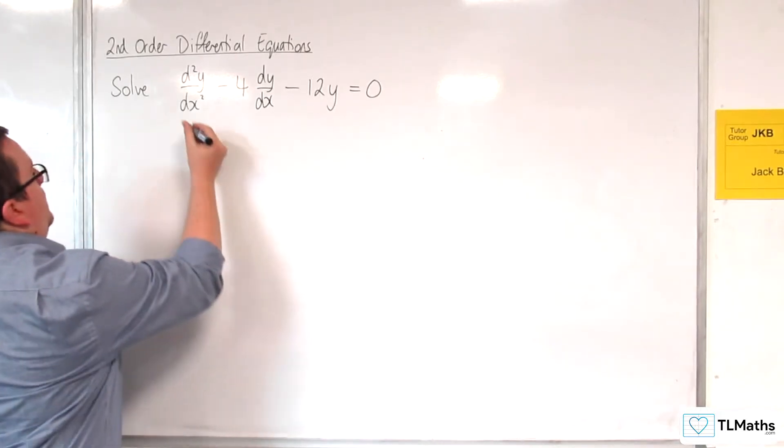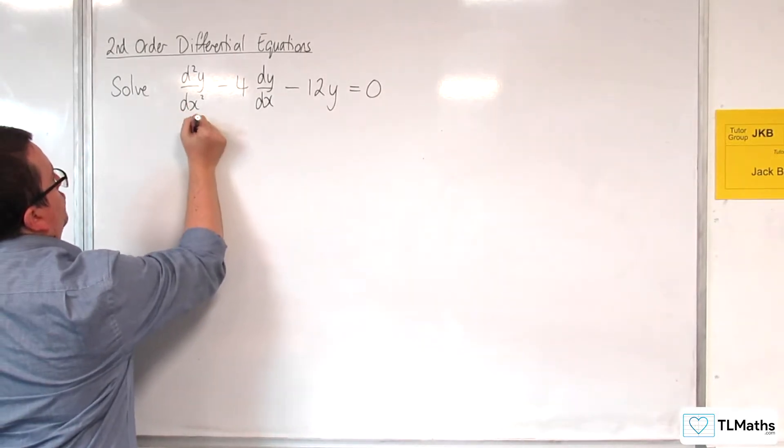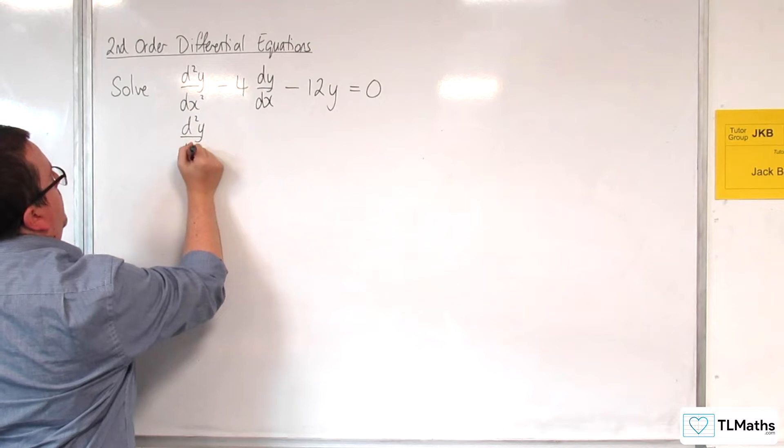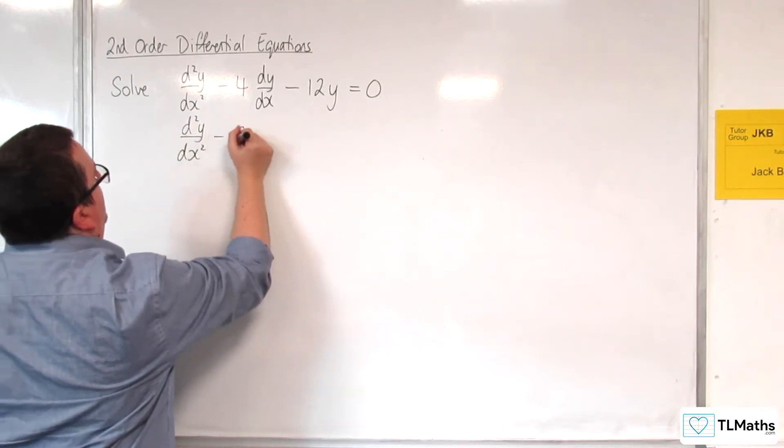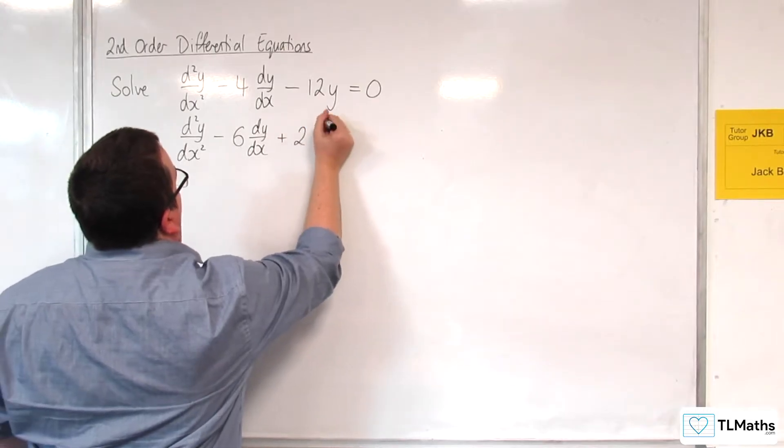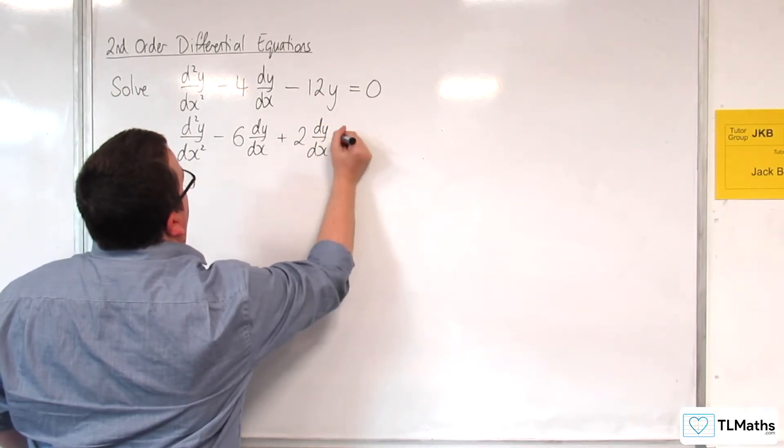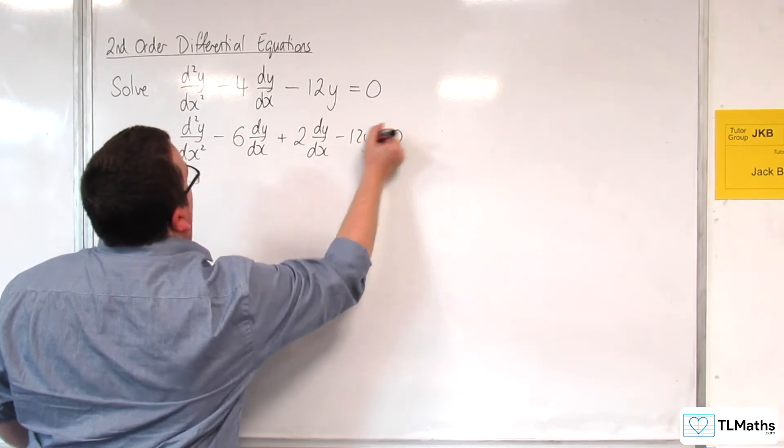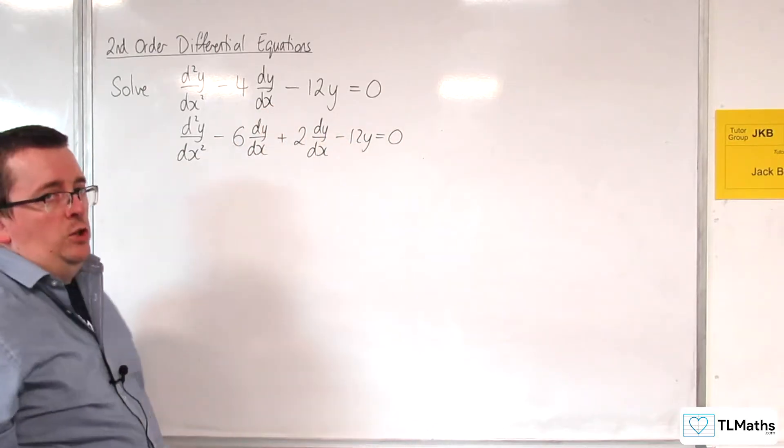So what you can do, using a method of factorizing quadratics, I can write this as d²y/dx² - 6dy/dx + 2dy/dx - 12y = 0. So I'm breaking that middle term up into two terms.